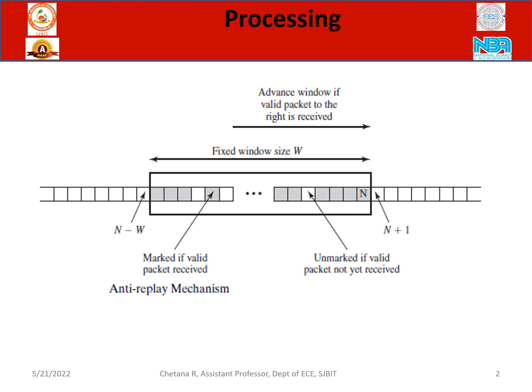If all things are fine, it will be in dark gray color. This is how the fixed window size of 64 moves — the window advances if a valid packet to the right is received. Once you get the valid packet, it moves to the right.